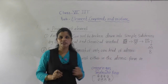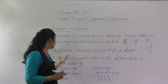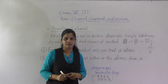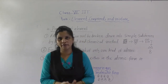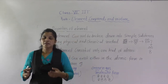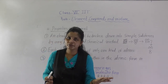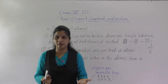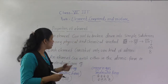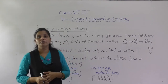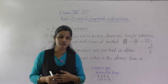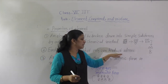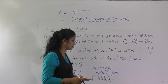See here, the picture is given. Now the next point: each element consists of only one kind of atom. This we have already discussed — if you take hydrogen you get only hydrogen atoms, and if you take carbon you get carbon atoms only.